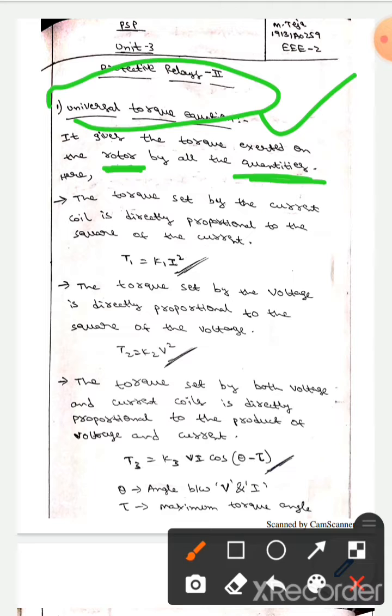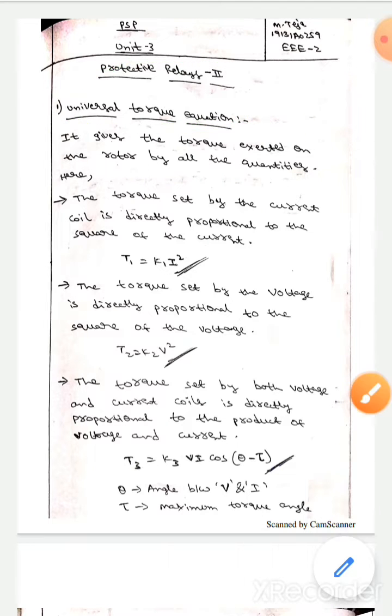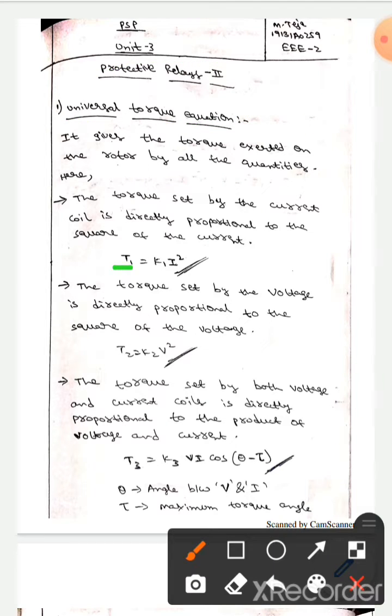Let's see. T1 is the torque set by the current coil and it is directly proportional to the square of current. So we can write T1 equals to k1 into i square.